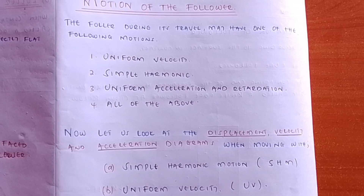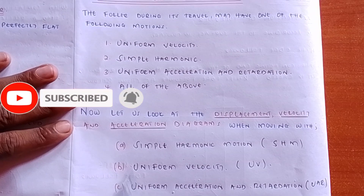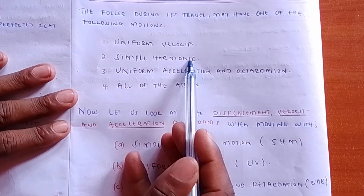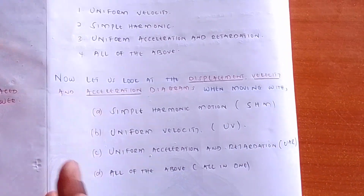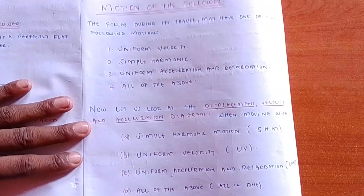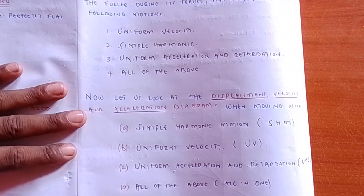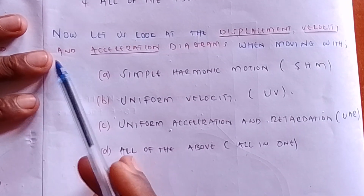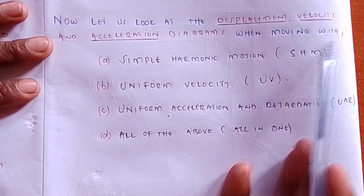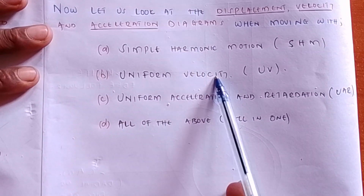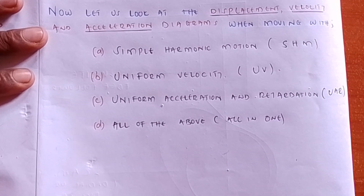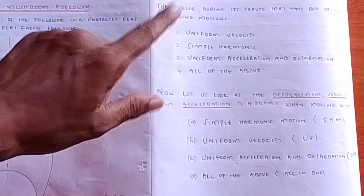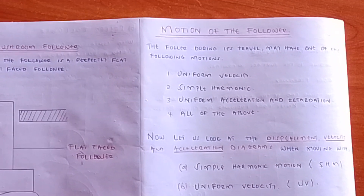The follower, during its travel, may have one of the following motions: uniform velocity, simple harmonic motion, uniform acceleration and retardation, or all of the above combined. We will look at the displacement, velocity, and acceleration diagrams when moving with simple harmonic motion, uniform velocity motion, uniform acceleration and retardation, and all of them combined. In the next video, I will show you how to construct the time travel of the follower. God bless you.